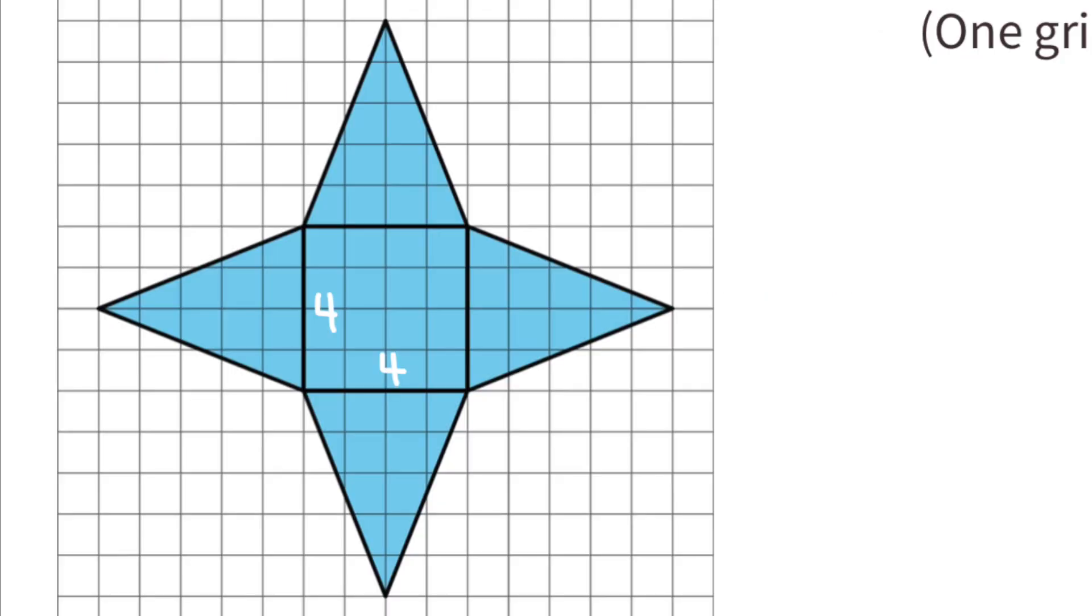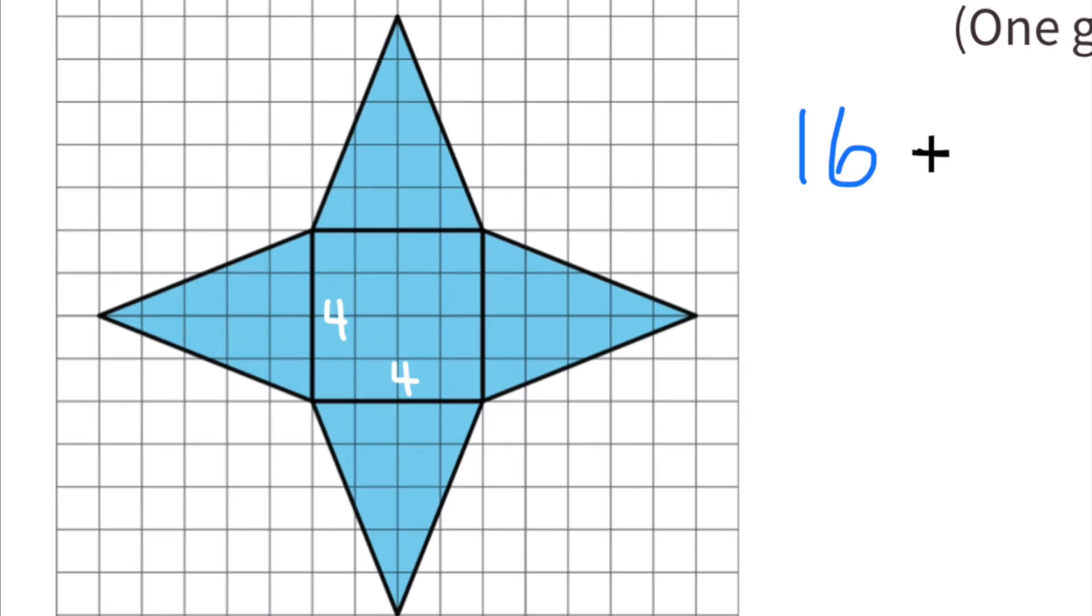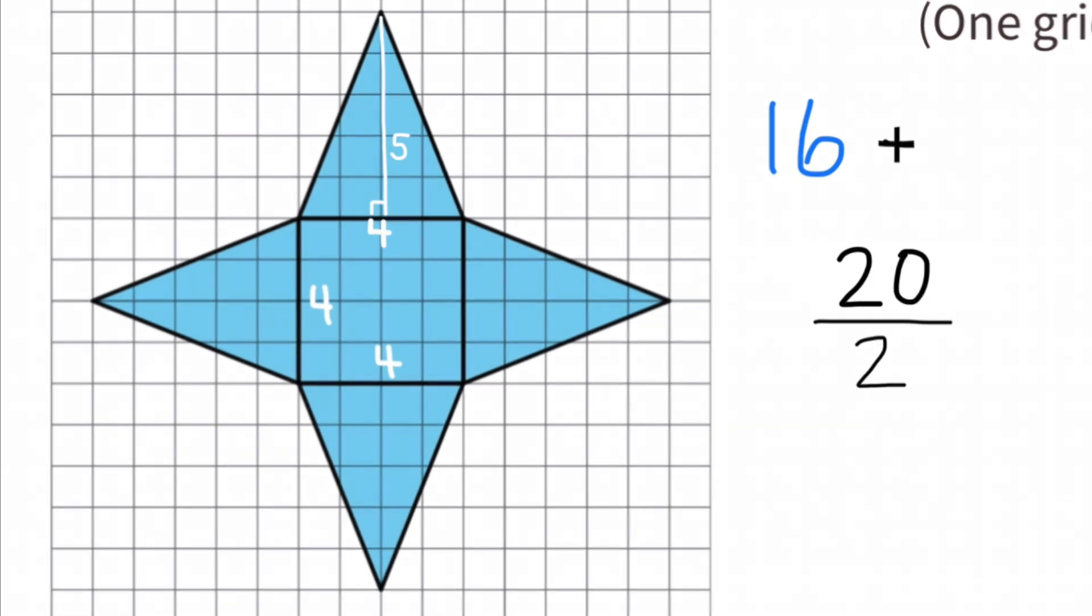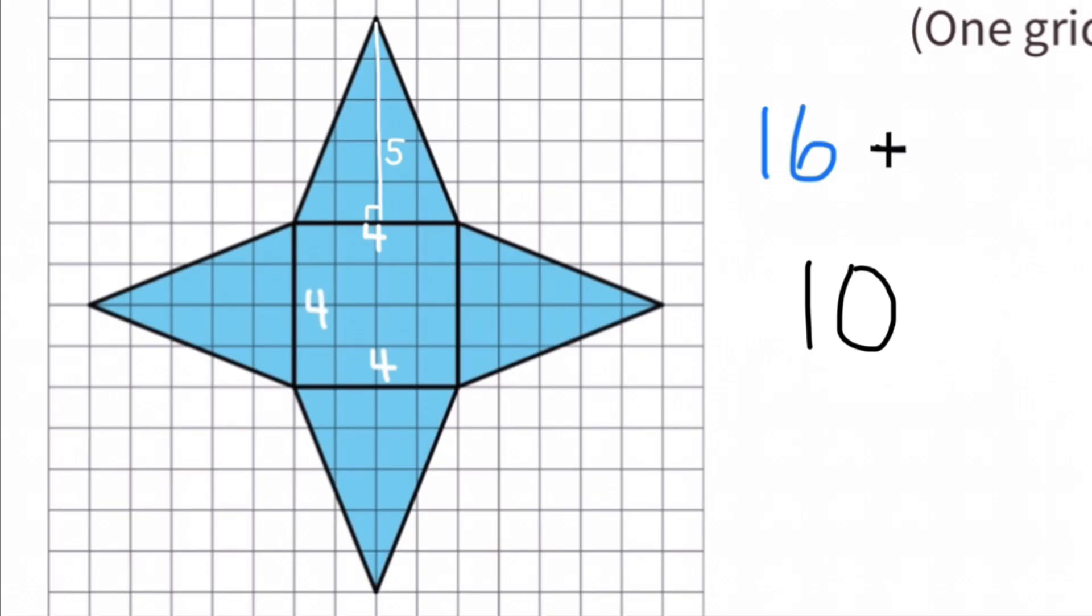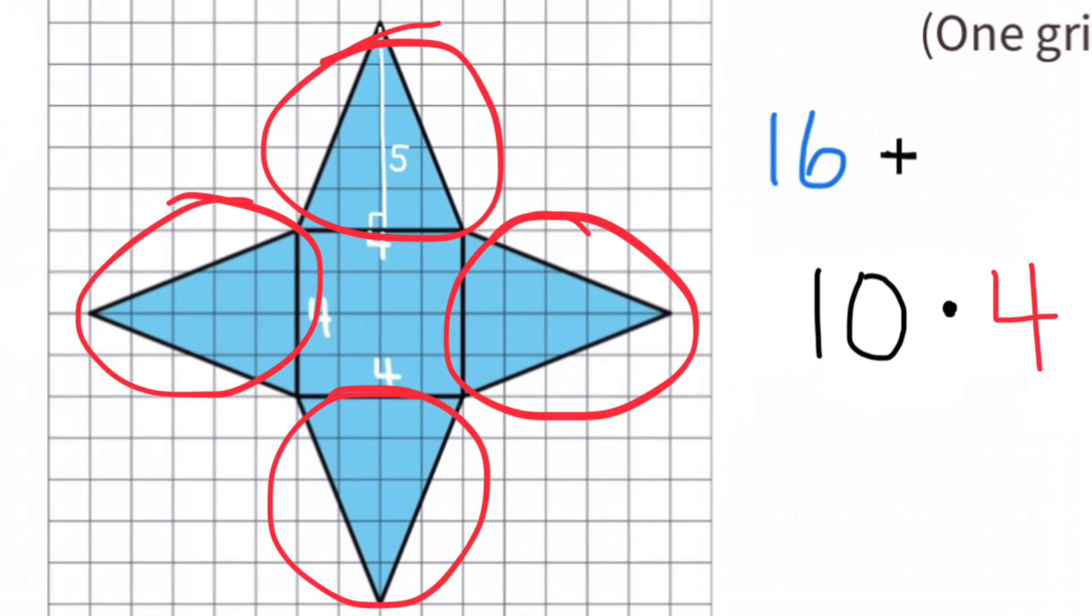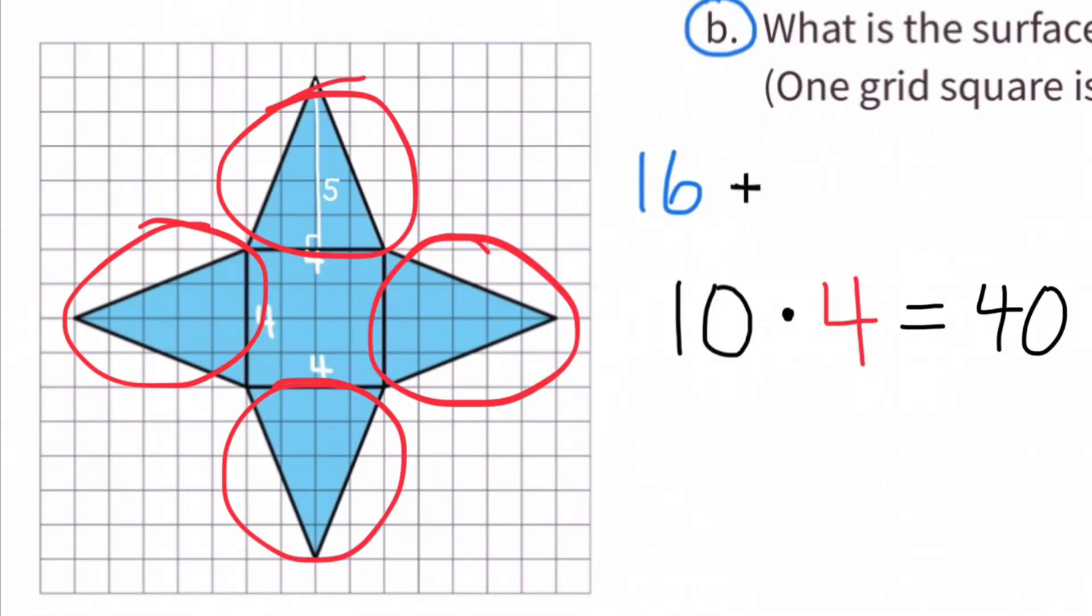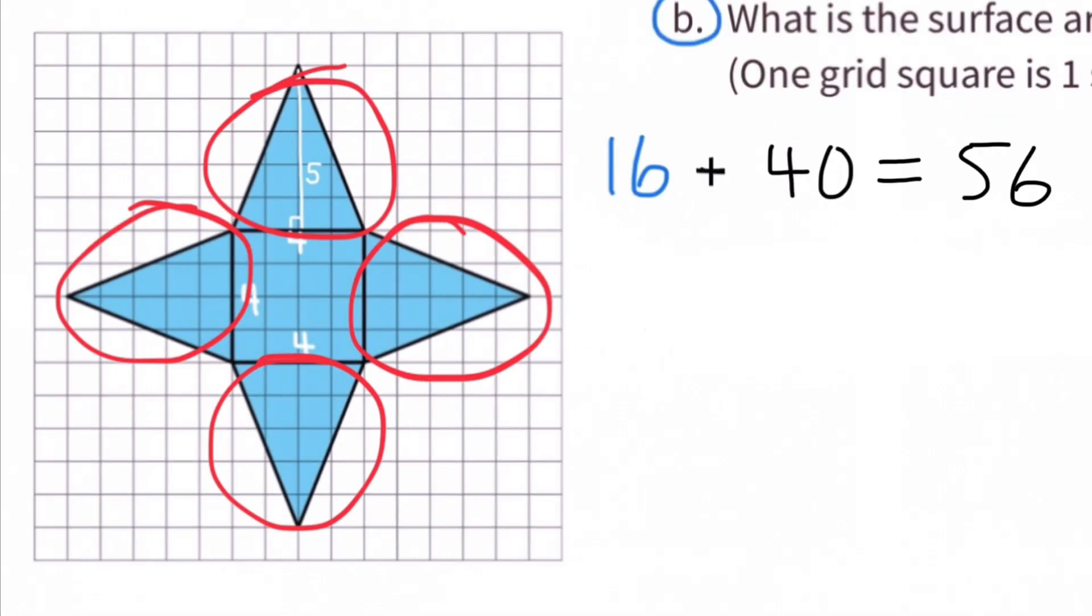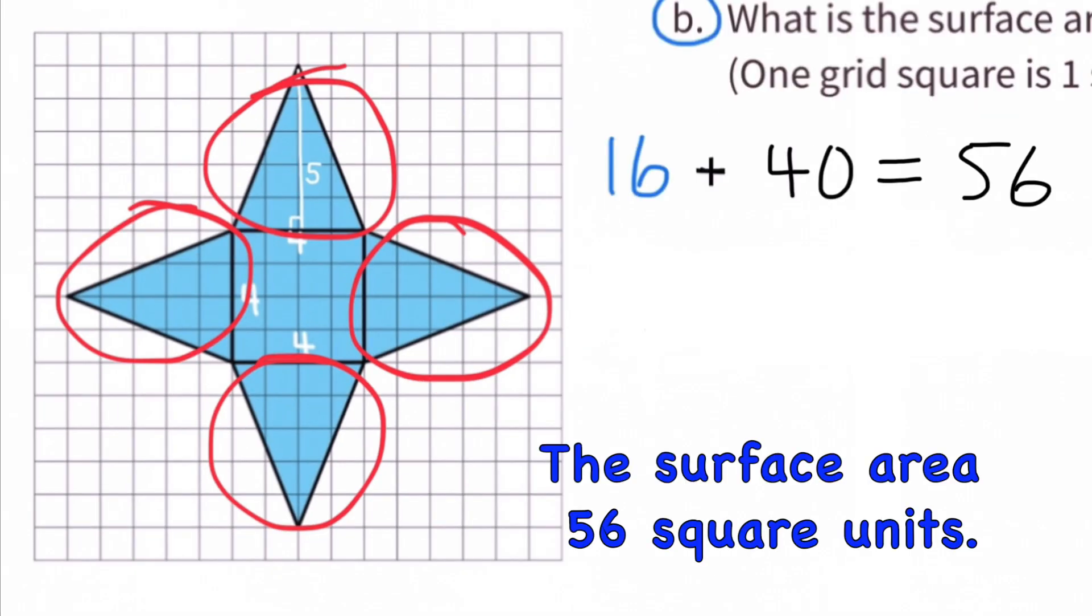For the base, the area would be 4 times 4, or 16 square units. For the outer triangles, the area would be half of 4 times 5, or half of 20, which is 10 square units per triangle. With four triangles, 10 times 4 is 40, or 40 square units. 16 square units plus 40 square units equals 56 square units. The surface area of this net is 56 square units.